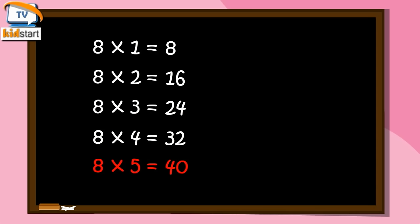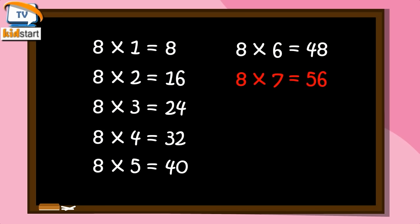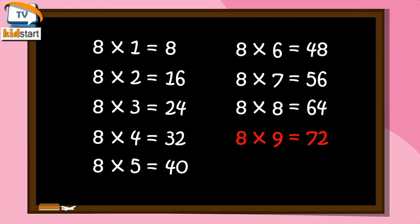Eight sixes are forty-eight. Eight sevens are fifty-six. Eight eights are sixty-four. Eight nines are seventy-two. Eight tens are eighty.